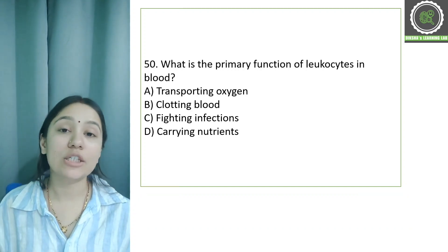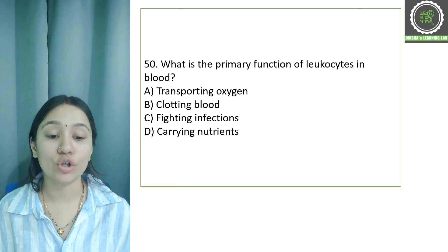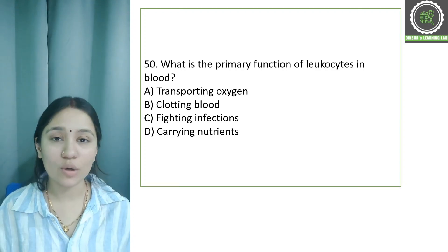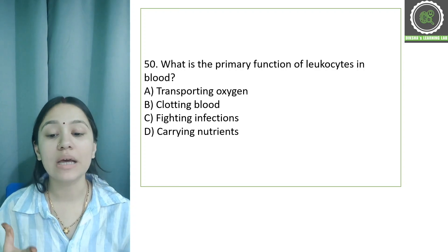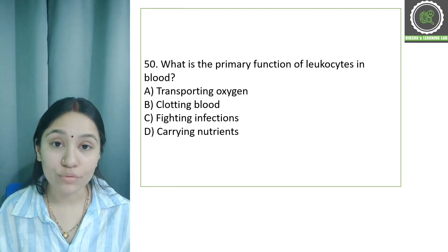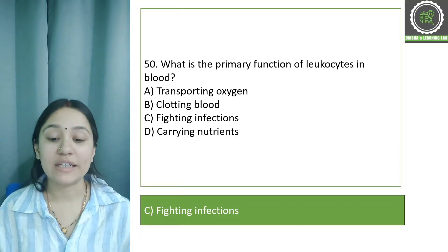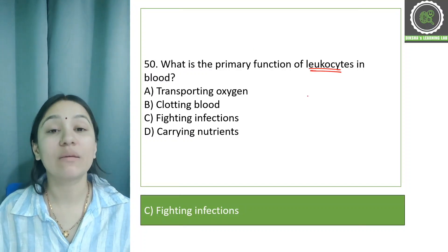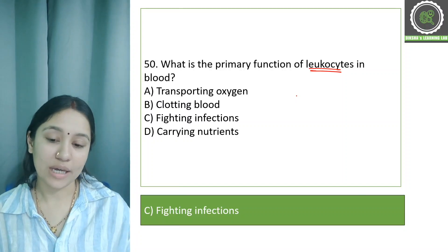Question number 50: What is the primary function of leukocytes in the blood? Options: transportation of oxygen, blood clotting, fighting infections, and carrying nutrients. The correct answer is option C, fighting infections. Leukocytes are responsible for fighting infections because they work to build the immune system.